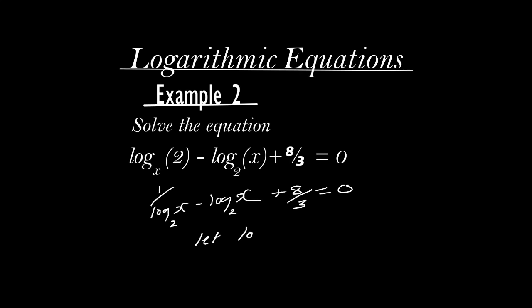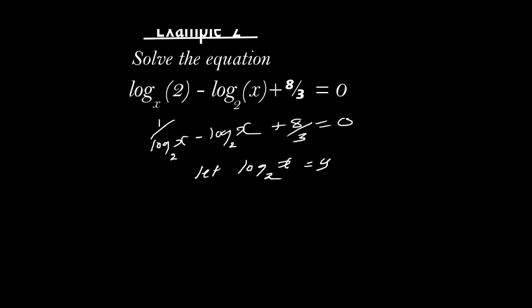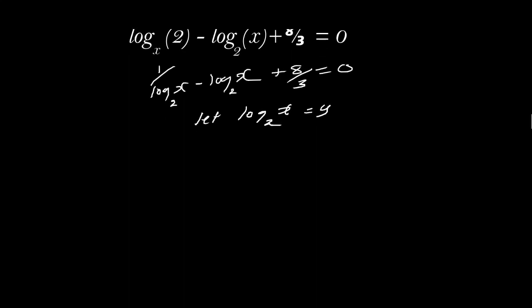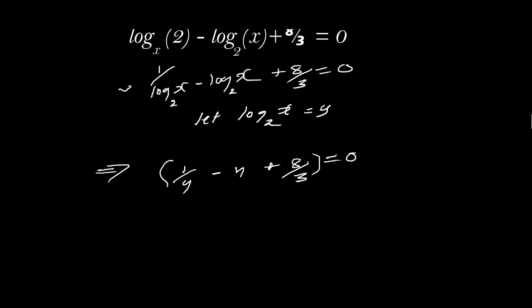The first term is to base two and the second term is log to base two. We let log X to base two equal a new unknown Y to simplify things. So one over log X to base two becomes one over Y, and minus log X to base two becomes minus Y, then plus eight over three equals zero. Wherever there is log X to base two, substitute with Y.